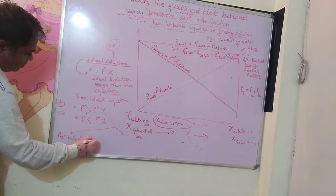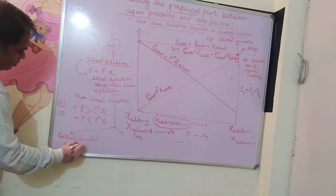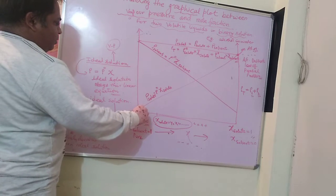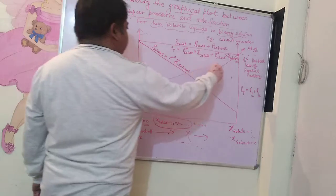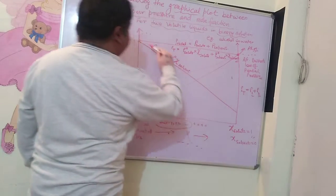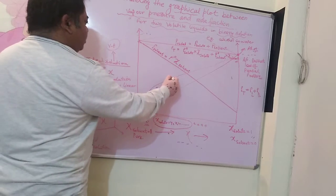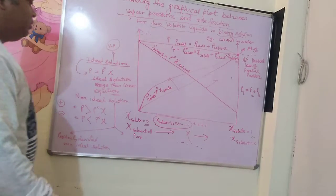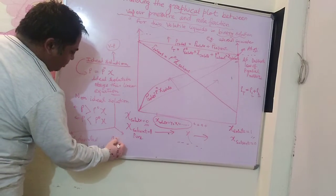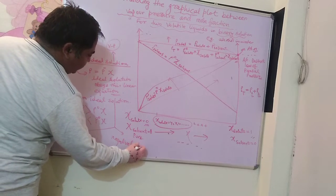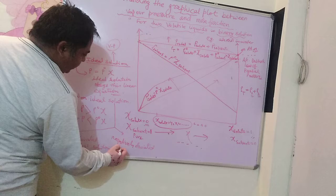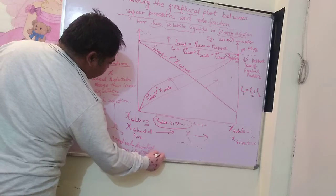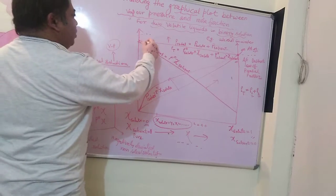In a positively deviated non-ideal solution, the curve will have an upper hump — it will not be straight but will form a convex shape upward. In the case of a negatively deviated non-ideal solution, the curve will be concave downward.